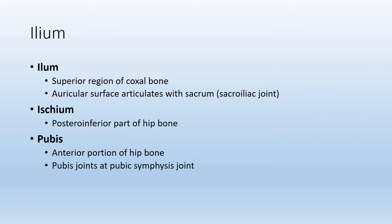The ilium is the superior half of the coxal bone and is the part that articulates with the sacrum, forming the SI joint or sacroiliac joint. The bottom half of the coxal bone is divided: the posterior inferior part is the ischium, and the anterior inferior part is the pubis or pubic bone. The left and right pubis meet in the midline at a thick pad of fibrocartilage known as the pubic symphysis joint.